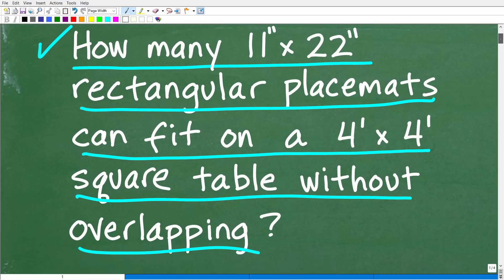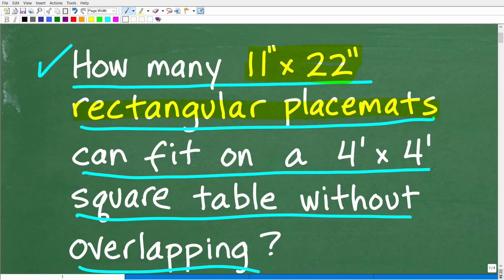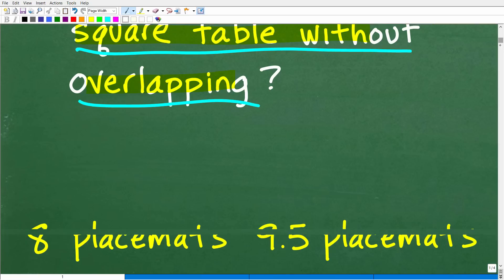Okay, now before I show you the answer, let's make sure we understand the question. So we have these rectangular placemats, 11 inch by 22 inch. So just in case you don't know what a placemat is, so let's suppose we have our table, and we have some circular or some round placemats. These are the things that are put in front of our chair. So when we eat our food, our food doesn't get all over our nice table. That is what a placemat is. And the question is saying, how many of these placemats can fit on a 4 foot by 4 foot square table without overlapping? So in other words, on our table, we're not going to have one placemat over another placemat. Okay, so that is the question. Let's go ahead and take a look at the answer.